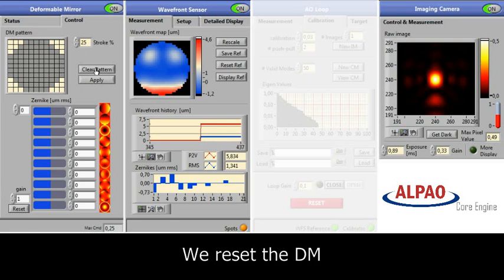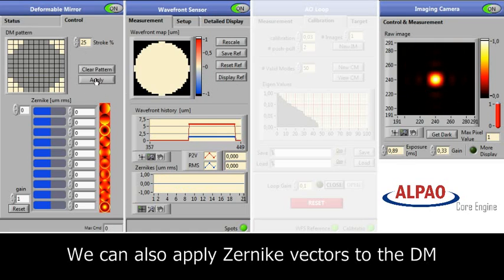To reset the deformable mirror, we click clear pattern, and on the wavefront sensor we can verify that the mirror is now flat.